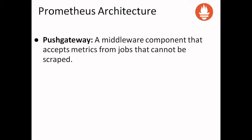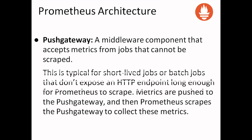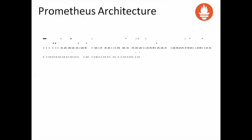The push gateway is a middleware component that accepts metrics from jobs that cannot be scraped. This is typical for short-lived jobs or batch jobs that don't expose an HTTP endpoint long enough for Prometheus to scrape. Metrics are pushed to the push gateway, and then Prometheus scrapes the push gateway to collect those metrics.